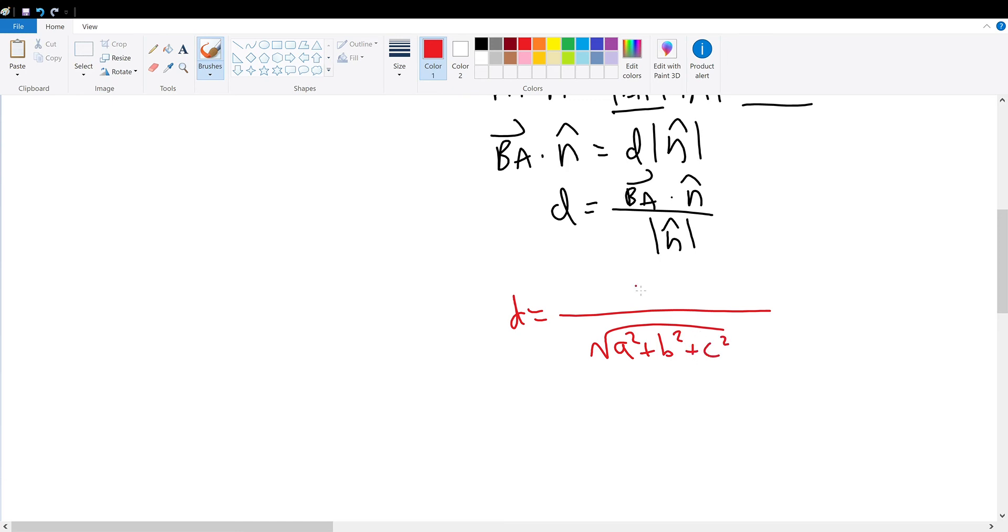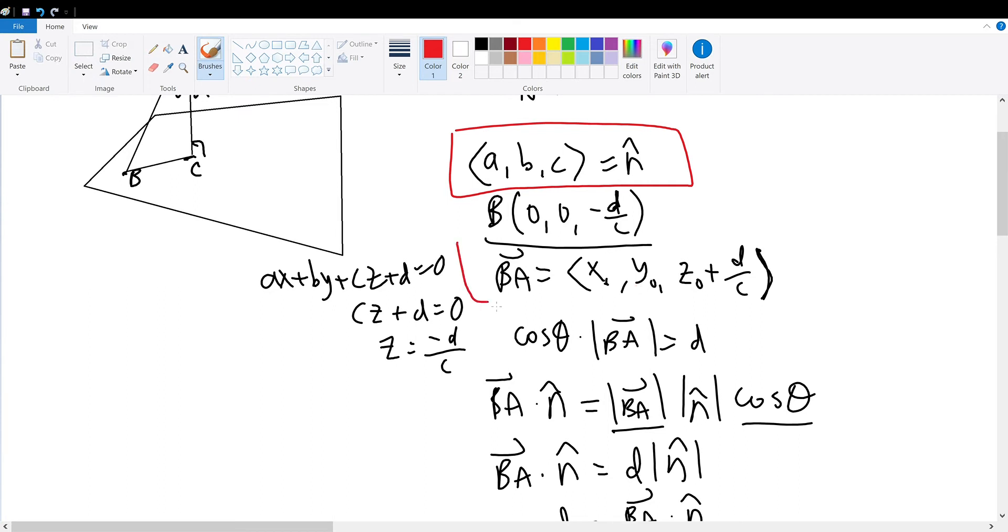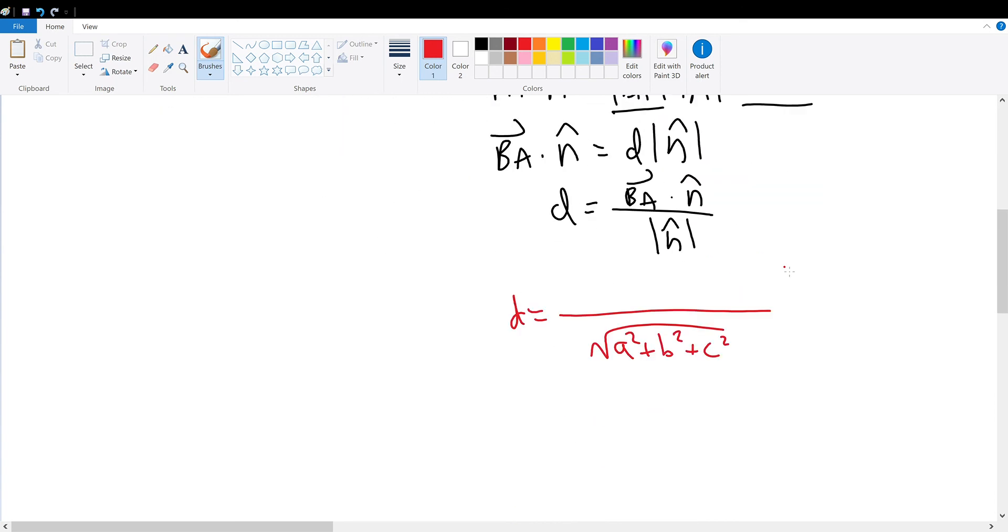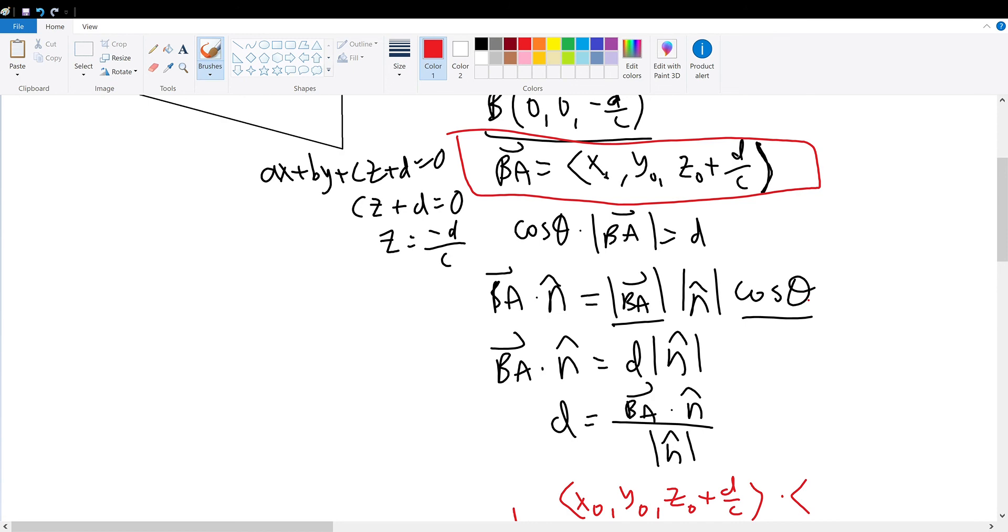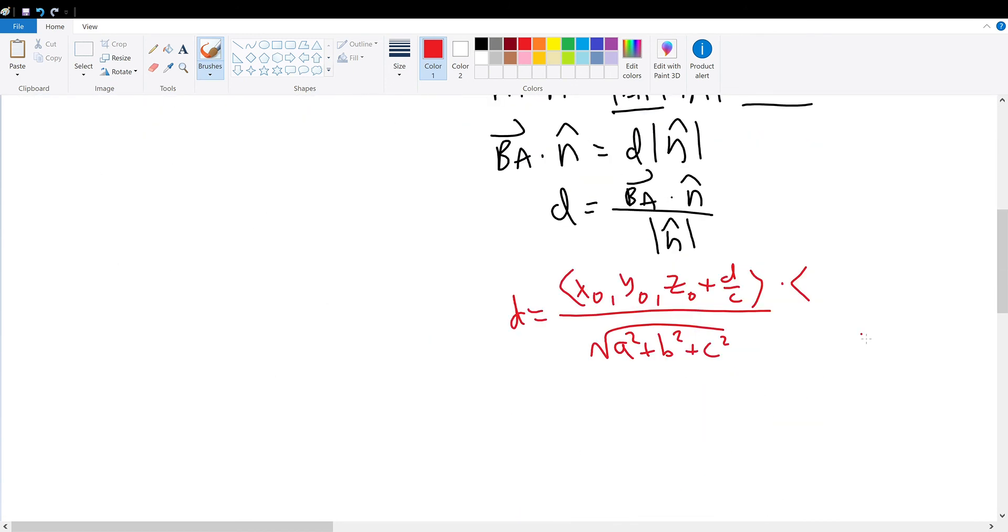And then, BA vector dot N vector. Well, BA vector right here is equal to x0, y0, z0 plus d over c. And the normal vector, once again, is A, B, C. So we apply that into this equation. From here, the denominator remains unchanged as the square root of A squared plus B squared plus C squared. And we dot product the two vectors together.